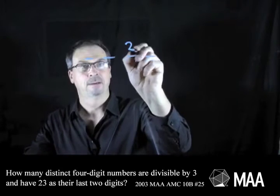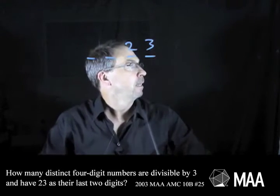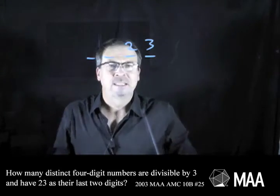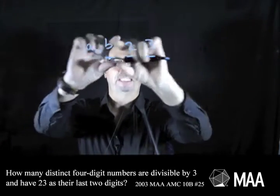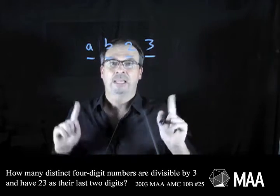That ends in 23. And it's divisible by three. So I'm looking for the first two digits. So I get a four-digit number that's divisible by three ending in 23. Okay,